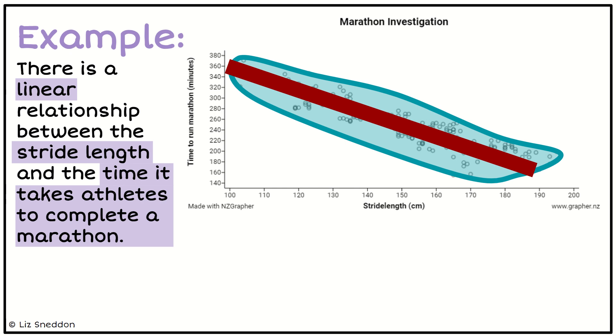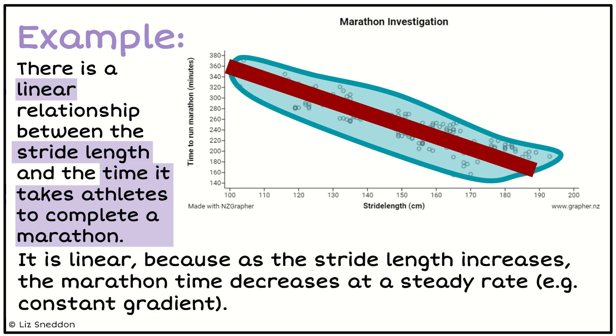So then I need to justify it. So I can say it's linear because, so that word because is always a good one to justify. And what I notice is as my stride length increases, the marathon time decreases at a steady rate. So that's why our line's going down at a nice steady rate or a constant gradient. So that's an example of being able to identify, describe and justify a linear relationship between two variables.